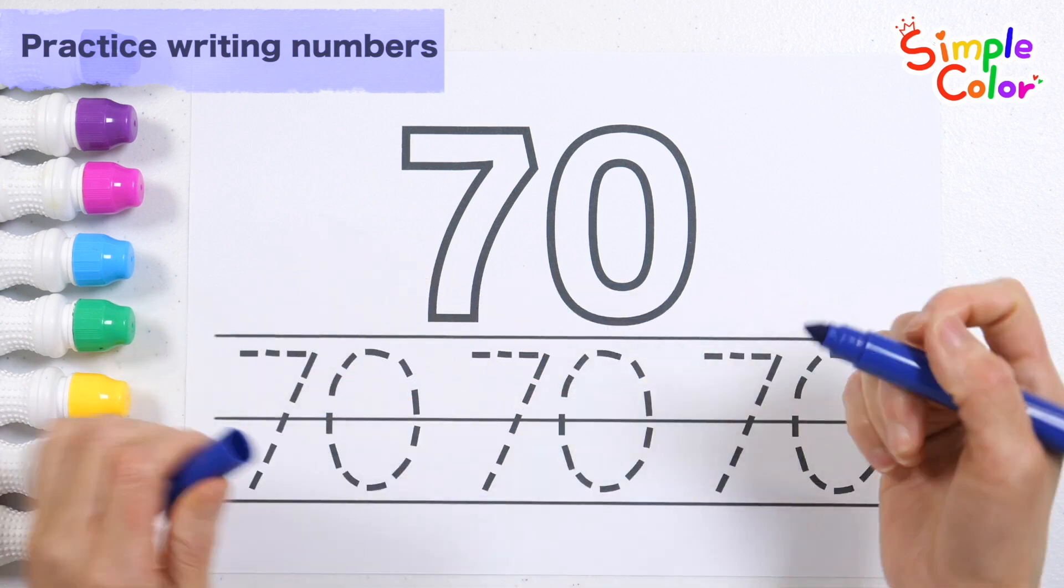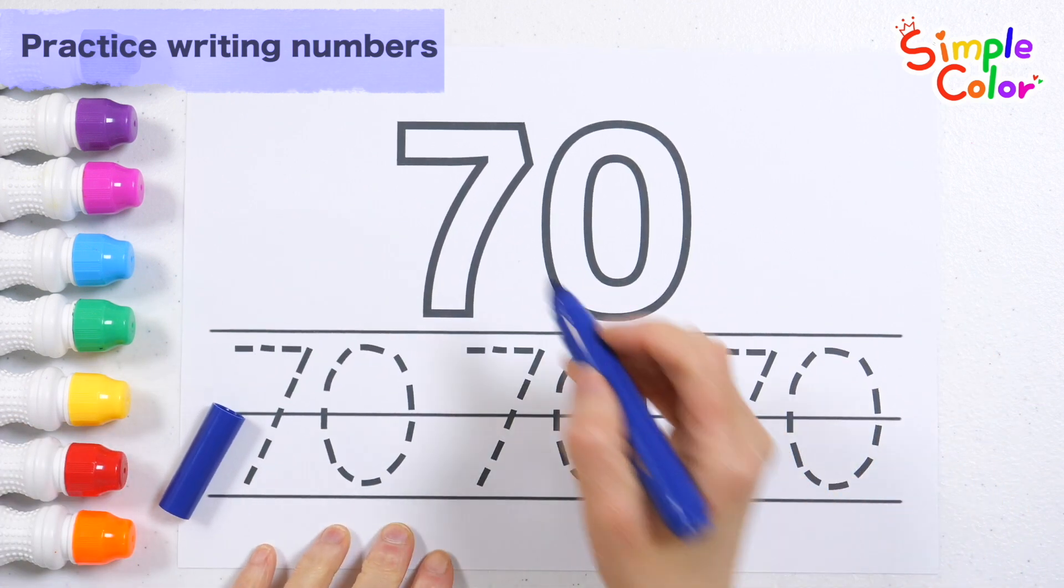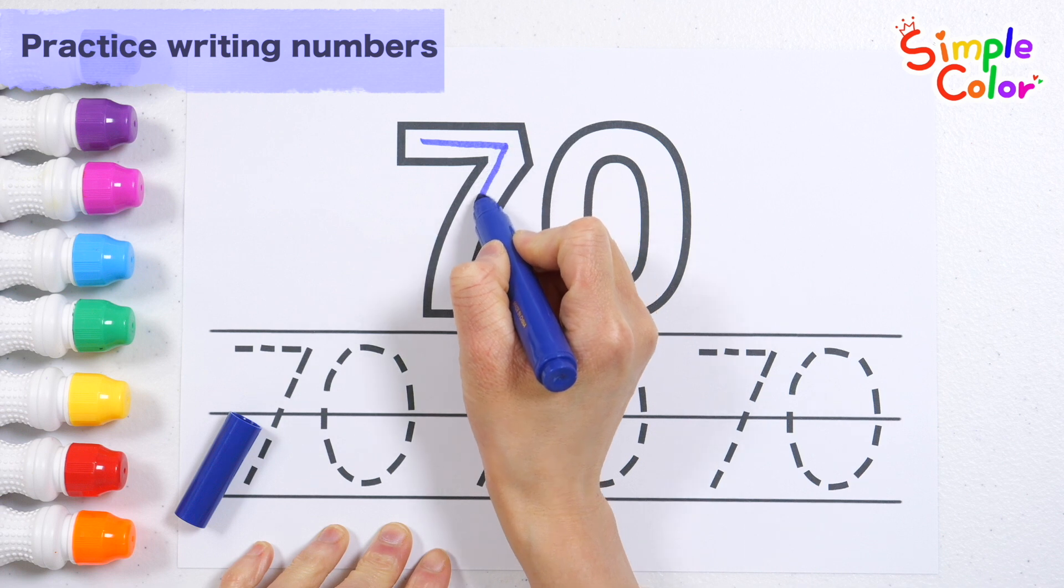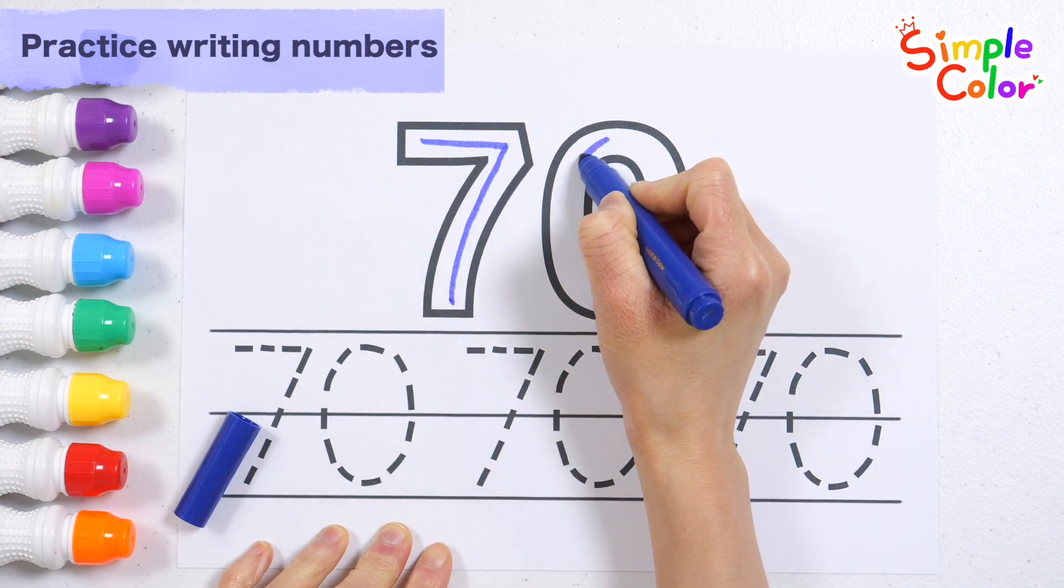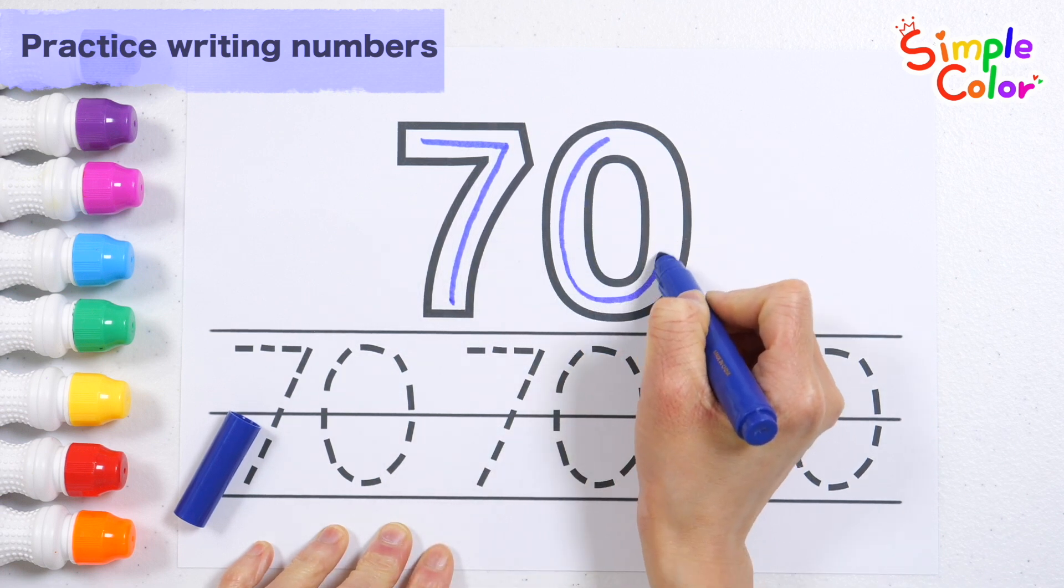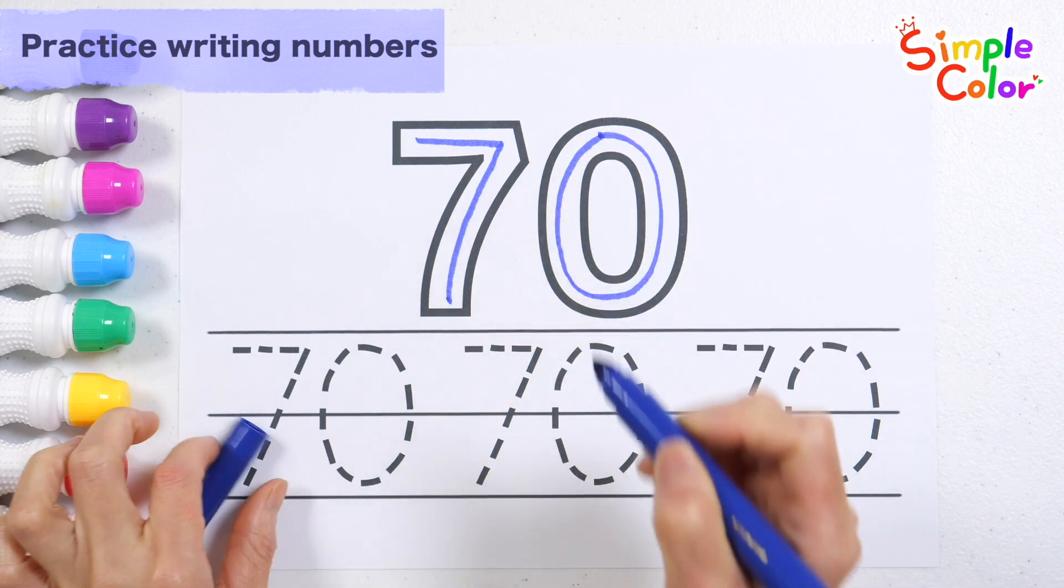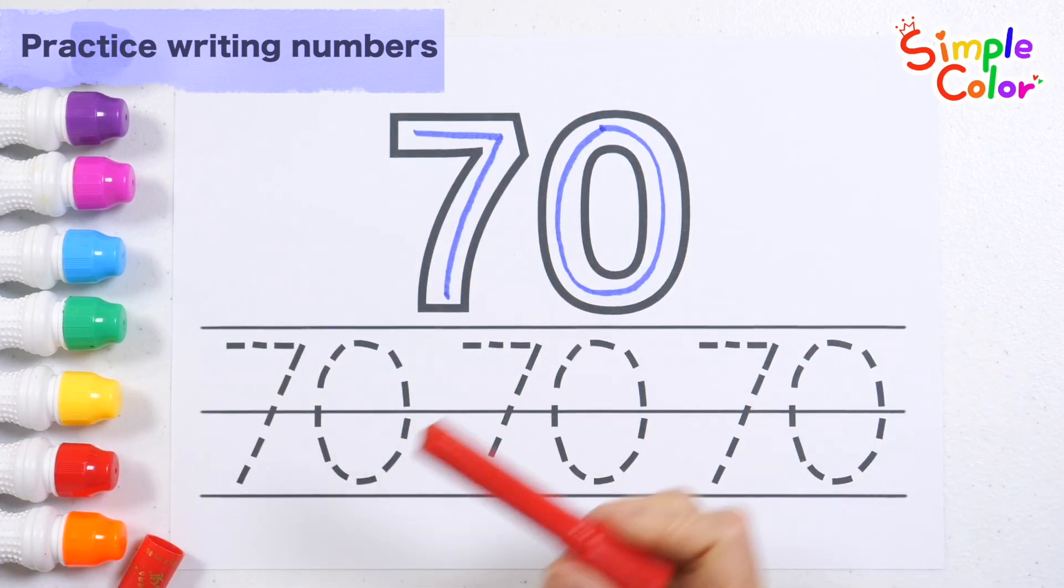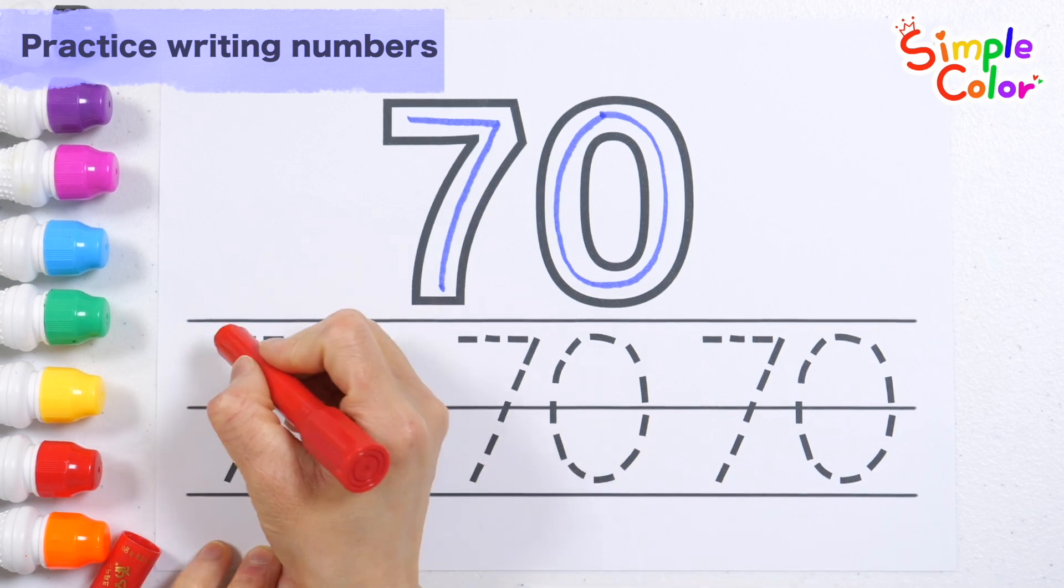Let's write it down in the thick number 70 at the top. 70. Shall we practice writing three more times with crayon below?